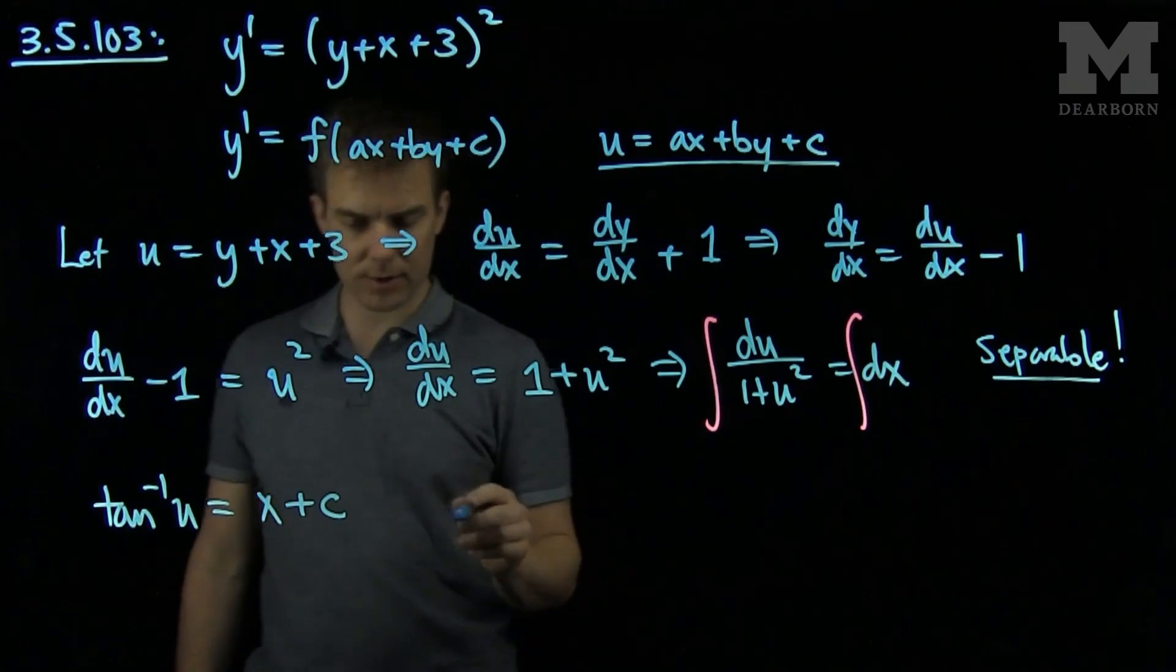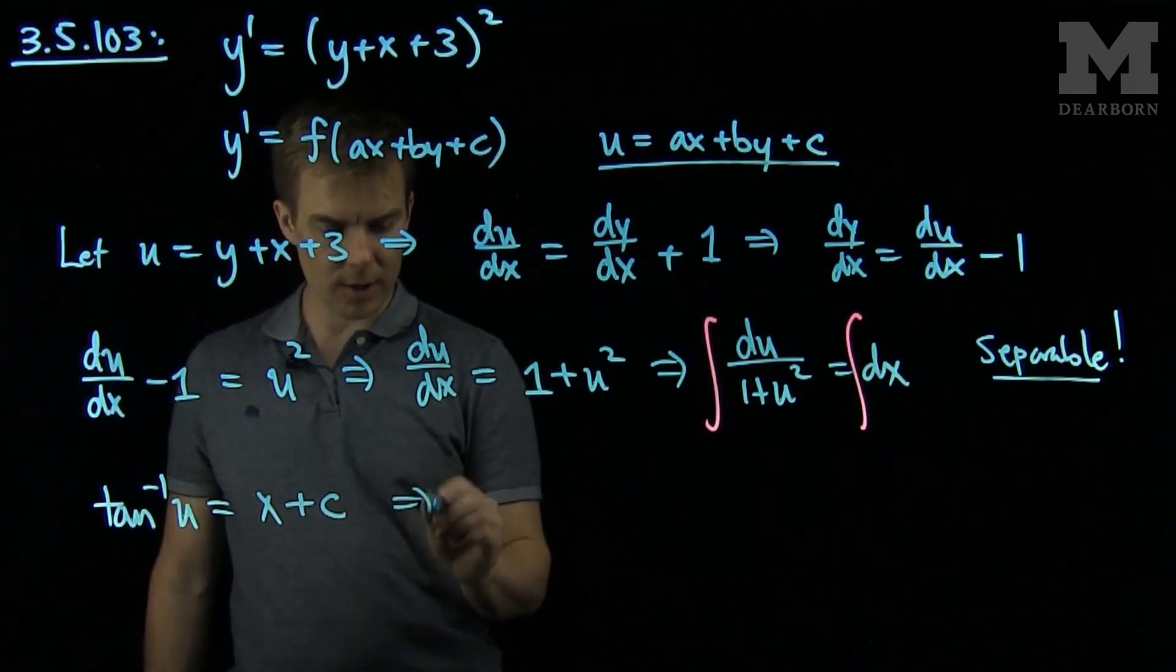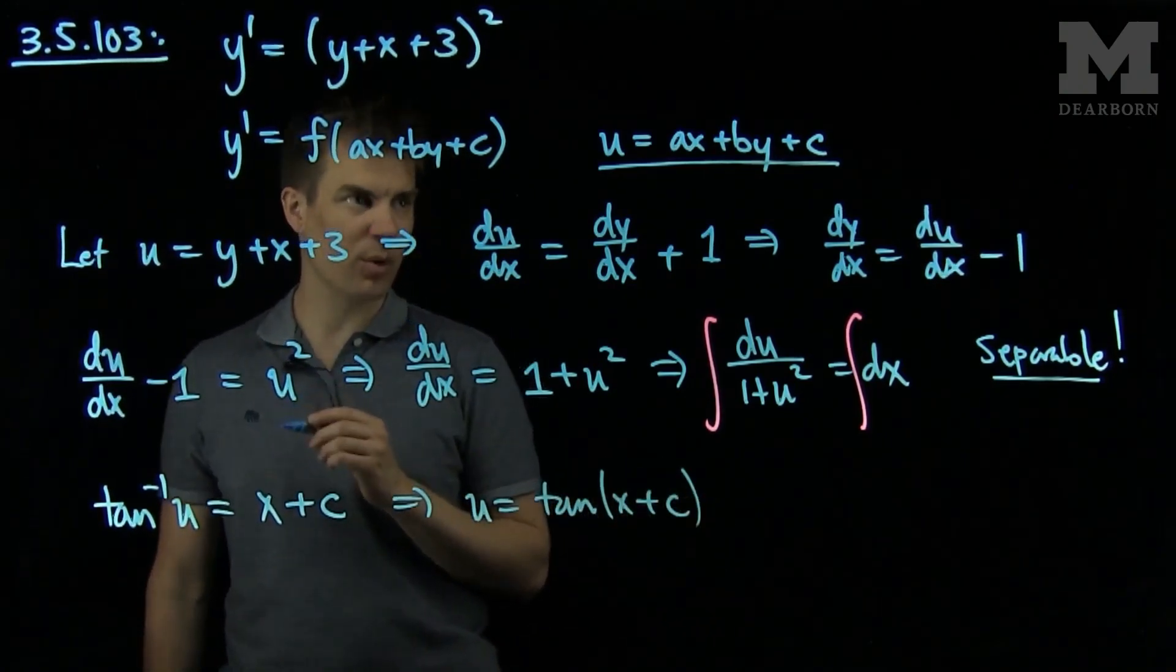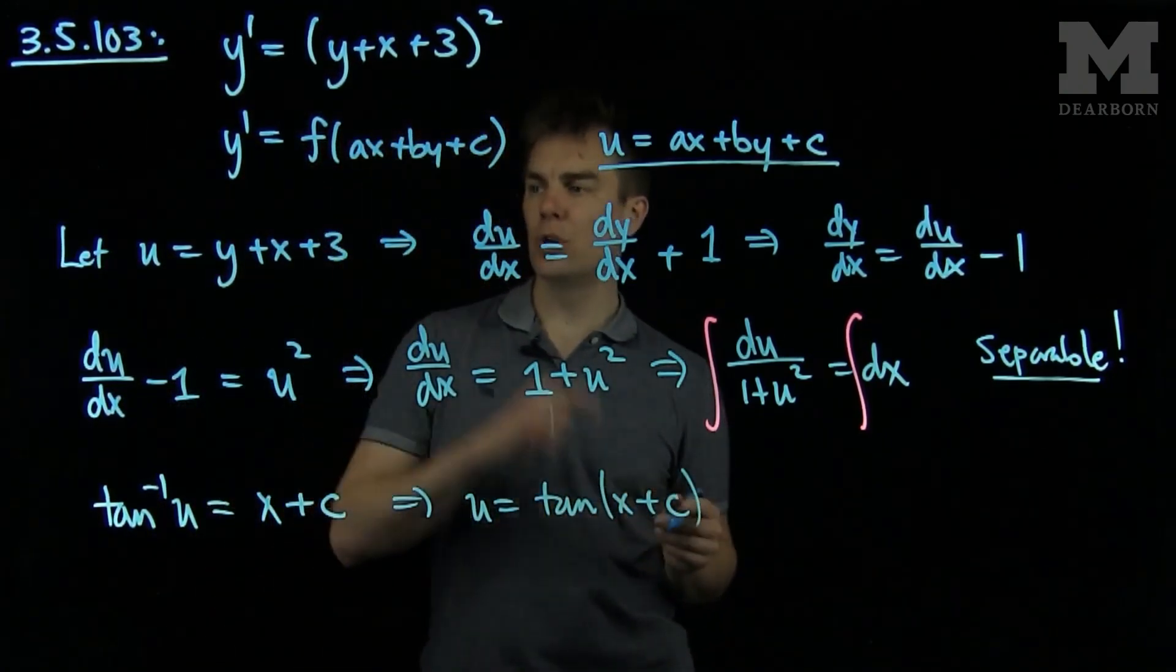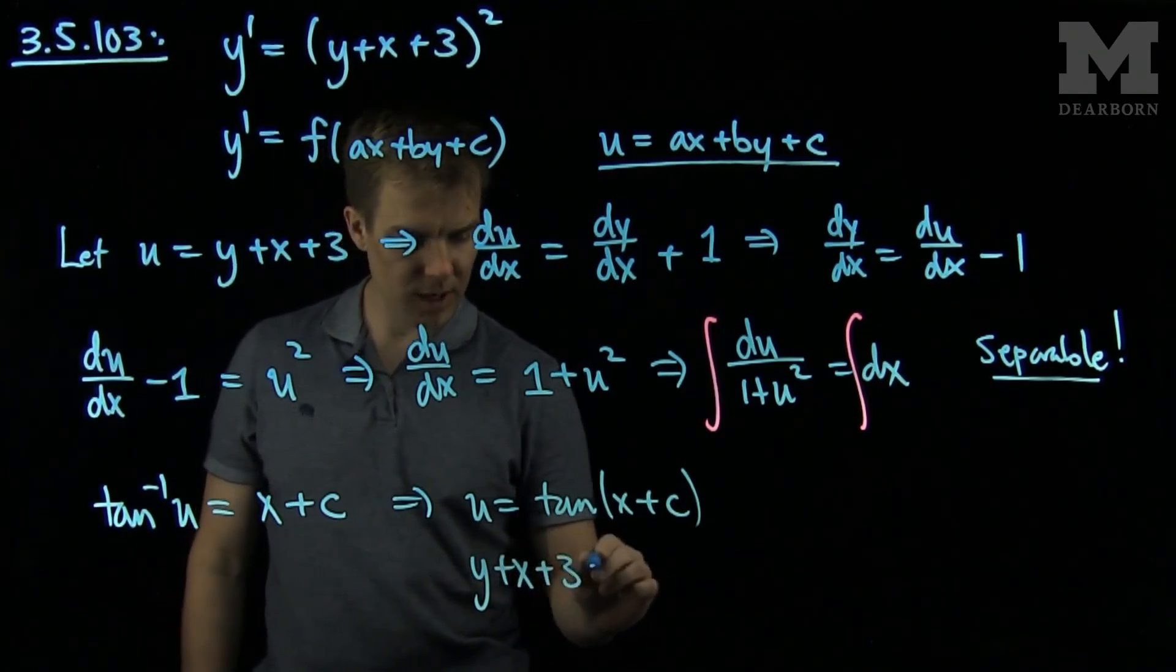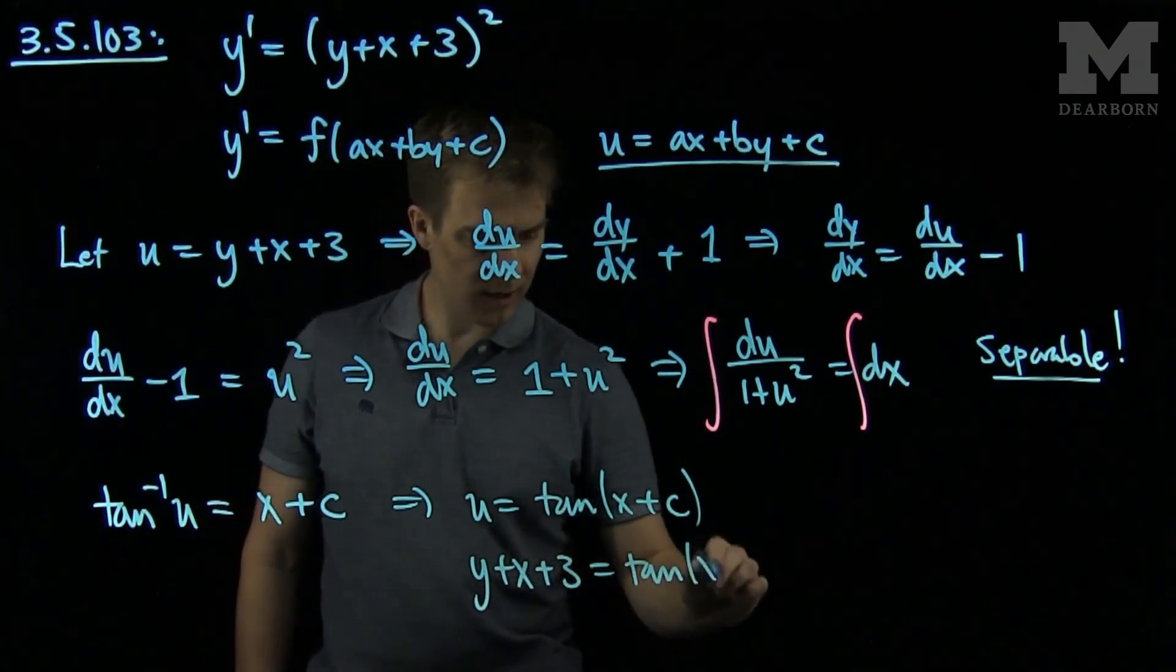So this will tell me that u is equal to the tangent of x plus c by taking the tangent of both sides. And now I substitute what u is. U is y plus x plus 3 equals the tangent of x plus c.